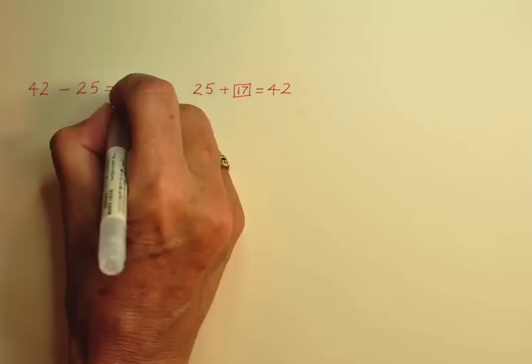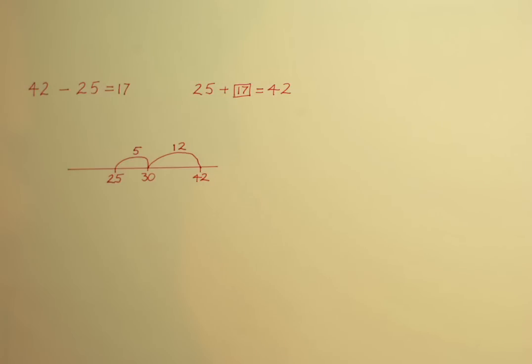The kind of problem that would require decomposition if it were presented as a problem to be solved on paper in columns is always easier to solve on an empty number line. However, it's worth noting that the opposite is also true, so an easy column subtraction such as 45 minus 22 where no exchanging of 10s is needed is better solved in columns.